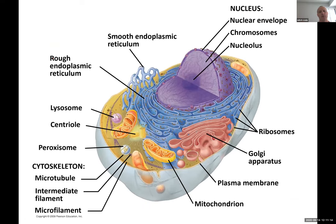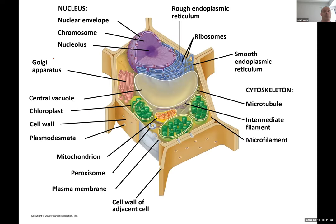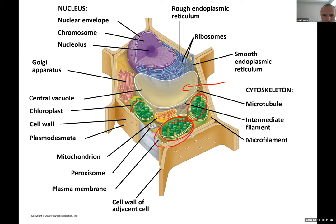Here you can see a plant cell and an animal cell. How do I know this is the plant cell? Because in the middle I have the central vacuole, I have chloroplasts here, and I have the cell wall which is very thick on the outside — you can clearly see it.